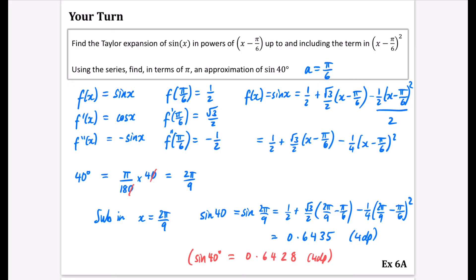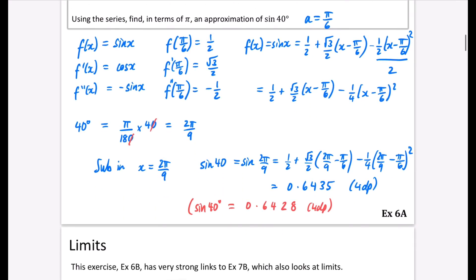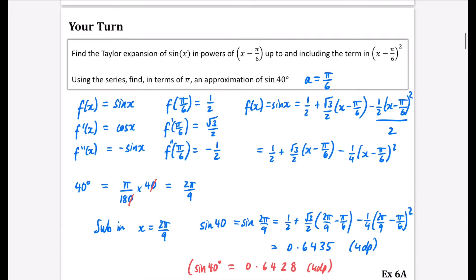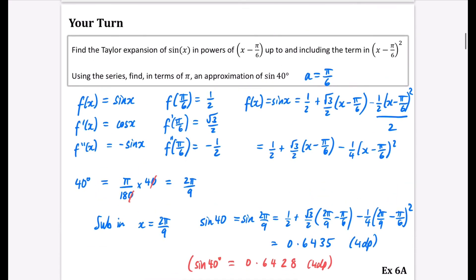You can now go to Exercise 6A. It's quite straightforward, though there may be some more challenging differentiation involving product rules. You don't need me to do loads of examples — just go and start practising the Taylor series method we've covered here.